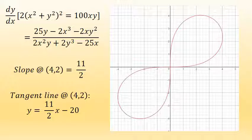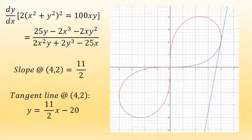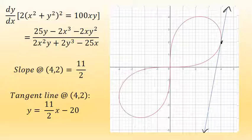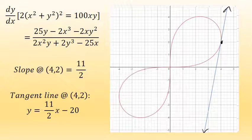Graphing y = (11/2)x − 20 on top of the original graph of the equation, I find that it is the graph of the blue line — the graph that touches the curve at the point (4, 2). The slope is 11/2 and the y-intercept is negative 20, which makes sense when looking at this graph. The final answer to the problem is y = (11/2)x − 20.